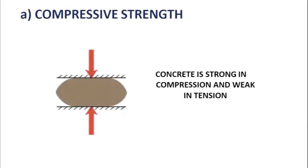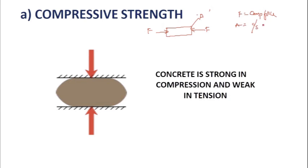Coming to the first one, compressive strength of concrete. Let us take a bar or a small object. When it is subjected to a force F, and the cross-sectional area is A, then F is the compressive force applied, A is the cross-sectional area, and therefore stress equals force divided by area.